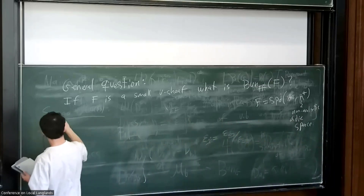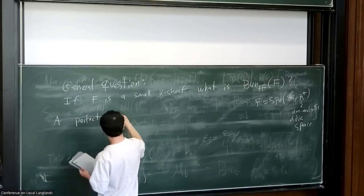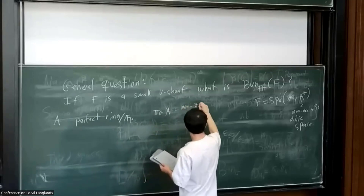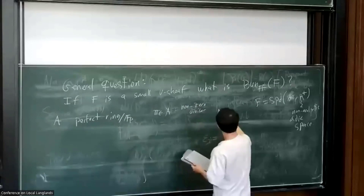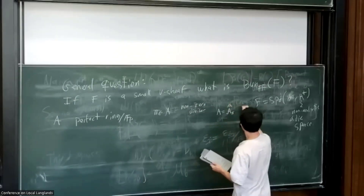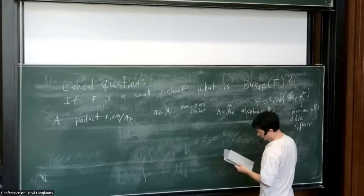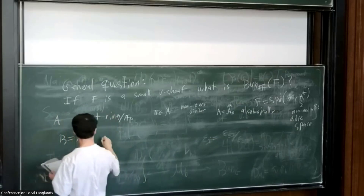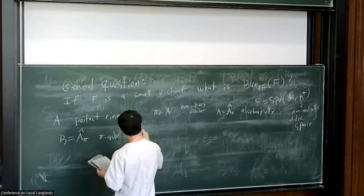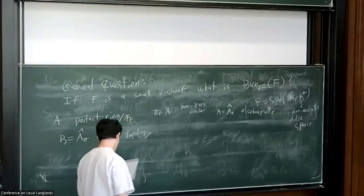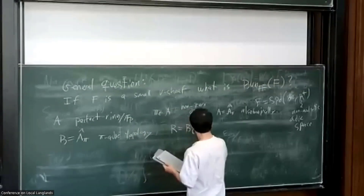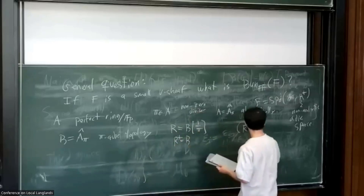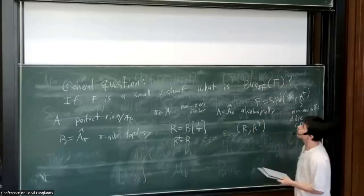Let me set some notation. Let A be a perfect ring over F_p, and take pi a nonzero divisor with A[1/pi] algebraically. I take a completion from the pi-adic topology, treating A as having discrete topology. I take R to be V[1/pi] and R+ equals V, so that (R, R+) is a perfectoid Huber pair.